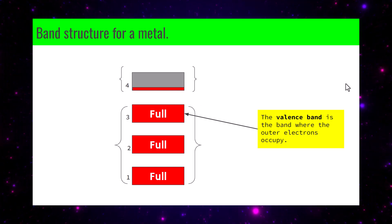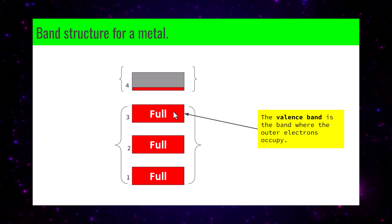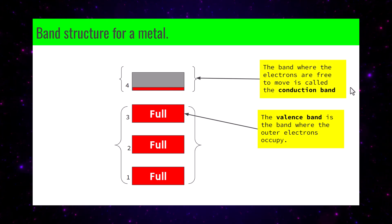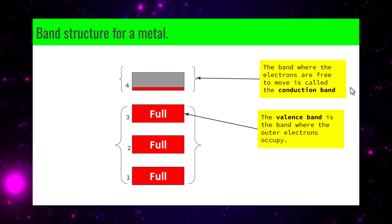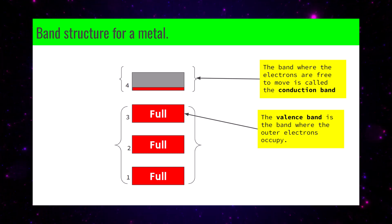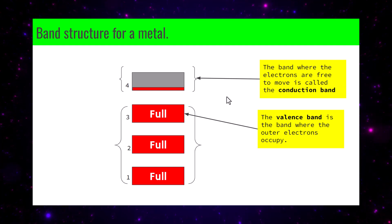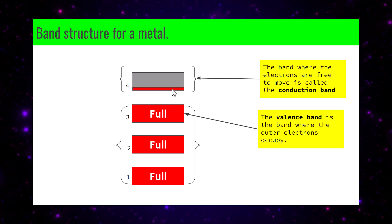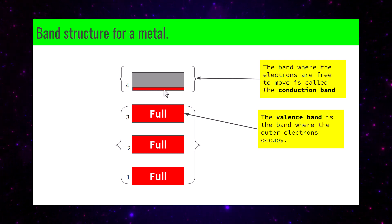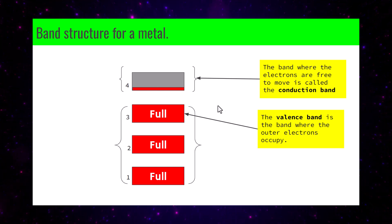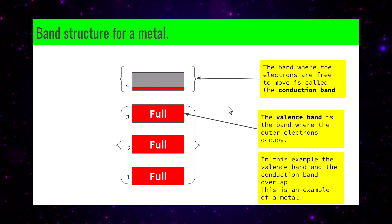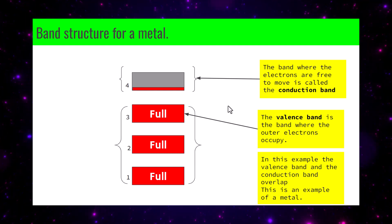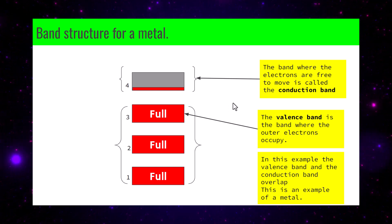The valence band is defined as the band where the outer electrons reside. The band where electrons are free to move is called the conduction band. For a metal, the valence band practically encroaches into the conduction band, making it an excellent conductor — the electrons can move about this band quite freely. The valence band and conduction band practically overlap.